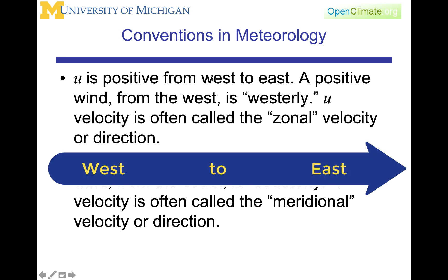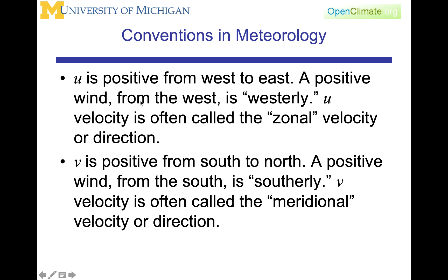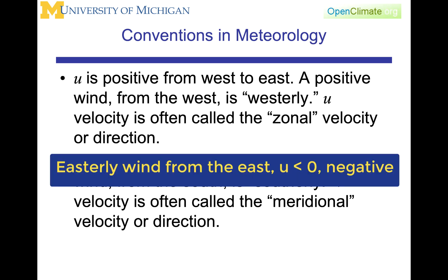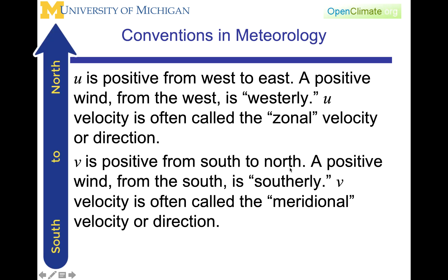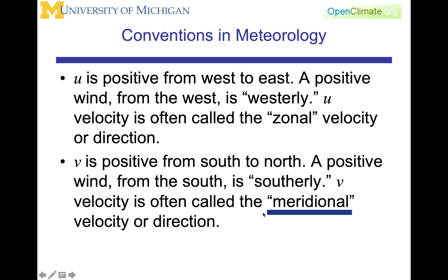The conventions in meteorology are such that U is positive from west to east. A positive wind is from the west, and by convention these are called westerly winds. The U velocity is often called the zonal velocity. If the zonal wind were easterly, that would be a negative U — the wind is coming from the east. V is positive from south to north; a positive wind from the south is a southerly wind. The V velocity is often called the meridional velocity.